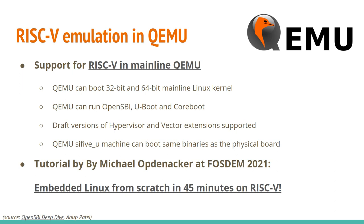There is full support for RISC-V in QEMU for both 32-bit and 64-bit, and you can test all the different draft specifications — hypervisor and vector. You can run OpenSBI, U-Boot, and Coreboot. You can even run the same binaries that you would on a physical board. There's a nice tutorial from Michael Opdenacker at FOSDEM 2021 about how to build an embedded Linux system from scratch in 45 minutes using QEMU.